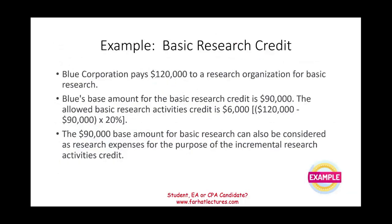Example: Blue Corporation pays $100,000 to a research organization for basic research. Blue's base amount for basic research is $90,000, so the amount above the base is $10,000, multiplied by 20%, giving a basic research credit of $6,000.